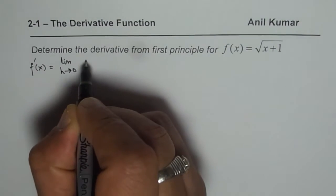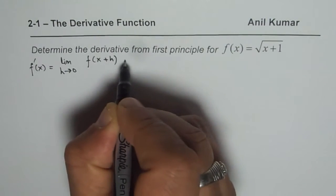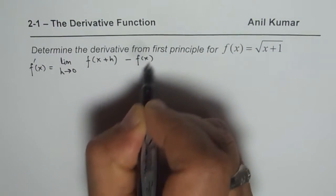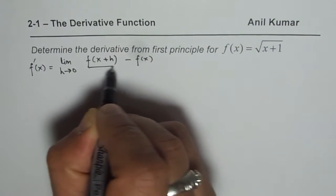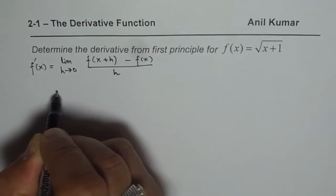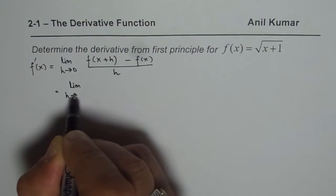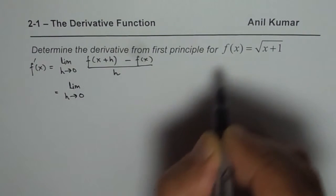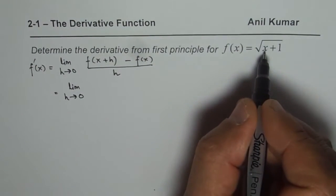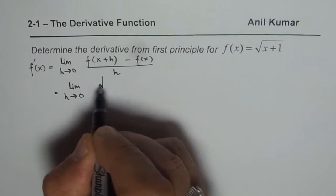f'(x) equals the limit as h approaches 0 of [f(x+h) minus f(x)] over h. We replace x with x plus h in the equation.